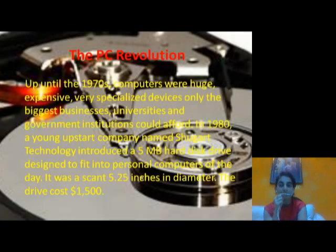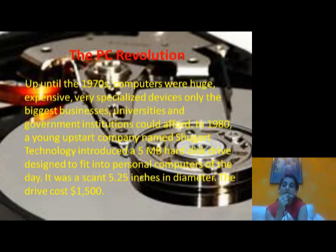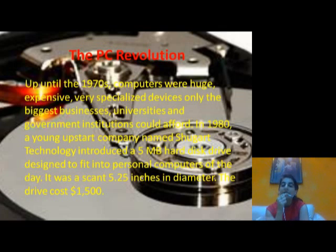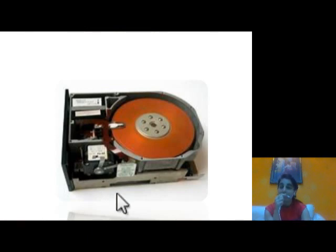The next milestone was the PC revolution. In the 1970s, computers were huge, expensive, and specialized devices affordable only by big businesses, universities, and government institutions. But in 1980, a company named Shugart Technology introduced a hard drive with 5 MB storage capacity that could easily fit into personal computers. The size was reduced from 14 inches to just 5.25 inches, though the cost was $1,500.